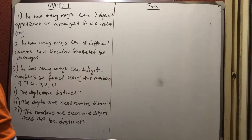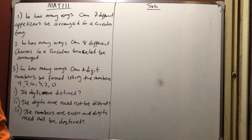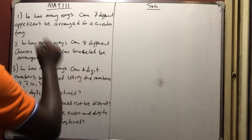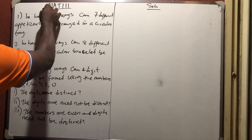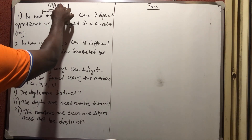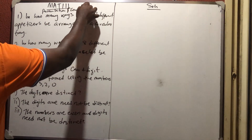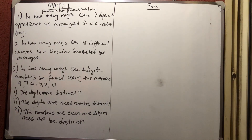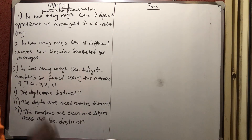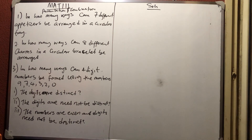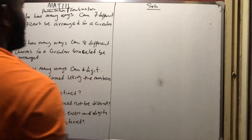Let's look at these algebraic questions. The first one is a permutation and combination question. It asks: in how many ways can seven appetizers be arranged in a circular tray?